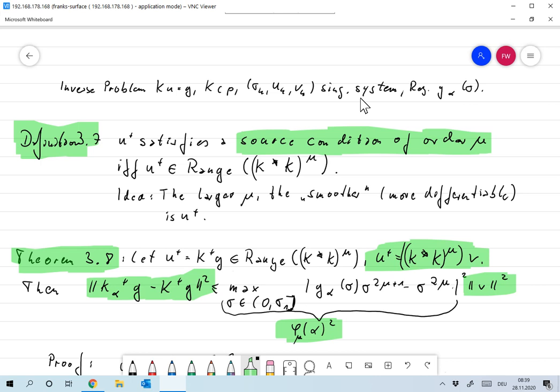So we saw that we can only get an estimate for the second error term if we have an additional condition either on the right-hand side, on G, or on the minimum norm solution U+. And we require an additional condition on U+, meaning that we have a vague idea where the solutions of our problem actually come from.